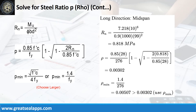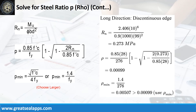Given long direction, mid-span moment equals 7.218 kN/m. Resistance factor equals 0.9, b equals 1000 mm, and d equals 99 mm. The beam design ratio RN equals 0.818 MPa, and reinforcement ratio rho equals 0.00302; use rho minimum of 0.00507. Given long direction, discontinuous edge moment equals 2.406 kN/m. Resistance factor equals 0.9, b equals 1000 mm, and d equals 99 mm. The beam design ratio RN equals 0.273 MPa, and reinforcement ratio rho equals 0.00099; use rho minimum of 0.00507.